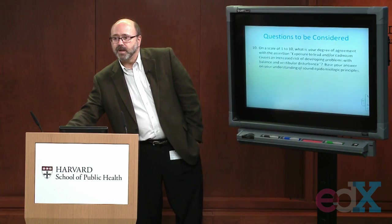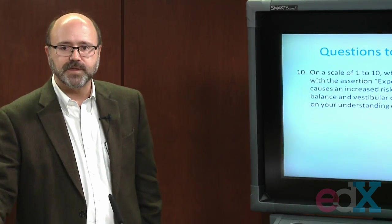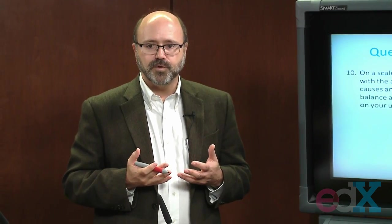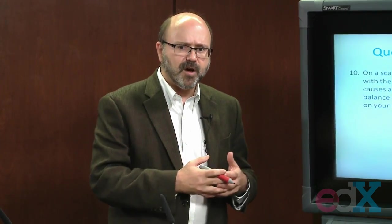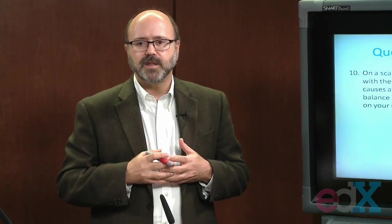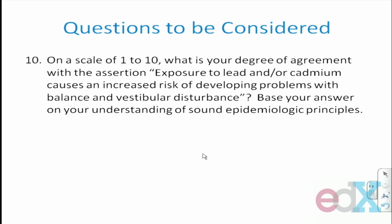Finally, after going through all of these steps — taking all the evidence you've gathered by thinking about the exposures, outcomes, confounding, bias, chance, and quality of measures — think about the answer to this question: on a scale of 1 to 10, what is your degree of agreement with the assertion that exposure to lead and/or cadmium causes an increased risk of developing problems with balance and vestibular disturbance? Base your answer on your understanding of sound epidemiologic principles learned throughout this class. I'll be back to discuss the results of your review after this part of the course is over.